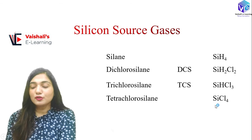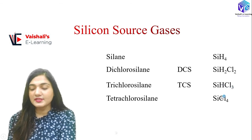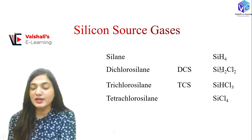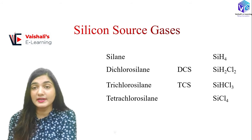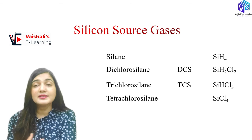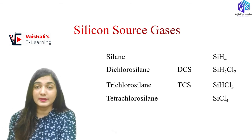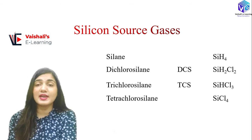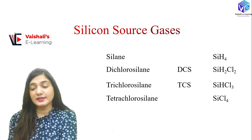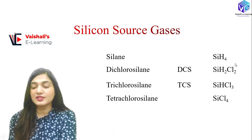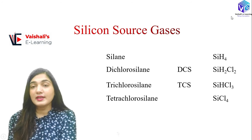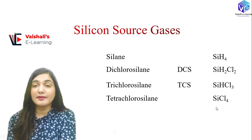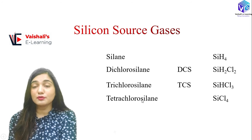SiCl₄ reacts with hydrogen to form SiHCl₃ in equilibrium with HCl. Further reaction with hydrogen produces more HCl. SiH₂Cl₂ and SiHCl₃ can be dissociated to provide SiCl₂, which is unstable and reacts with hydrogen to provide silicon and HCl. All source gases ultimately react with hydrogen to provide silicon. SiH₄ reacts at 900°C to provide silicon directly, while SiCl₄ reacts with hydrogen at 1100°C.